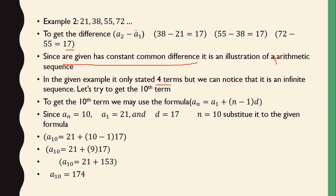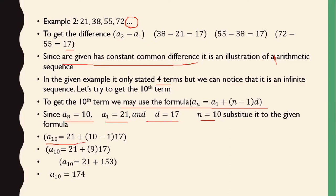In the given example, it only stated four terms, and again it is infinite by the ellipsis. So let's try to get the 10th term. Substitute into the formula: a sub n equals a sub 1 plus the quantity of n minus 1 times d. So a sub 10: n is 10, a sub 1 is 21, d is 17, and number of terms is 10. We have a sub 10 equals 21 plus the quantity of 10 minus 1 times 17. 10 minus 1 is 9, times 17 equals 153. So a sub 10 equals 21 plus 153, which equals 174.